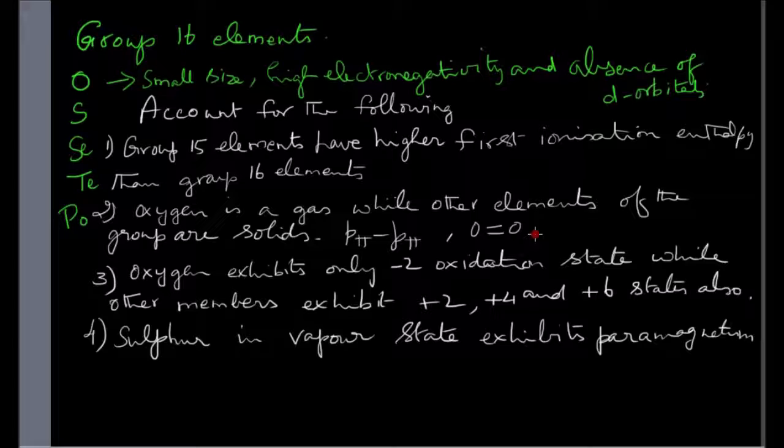And what is the reason for not exhibiting plus 2, plus 4 and plus 6 states by oxygen? You should be knowing that it is due to the absence of d orbitals.